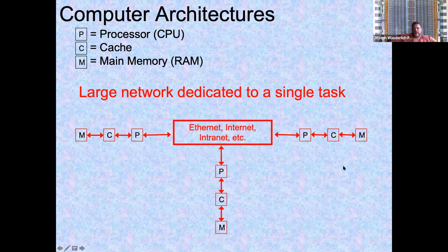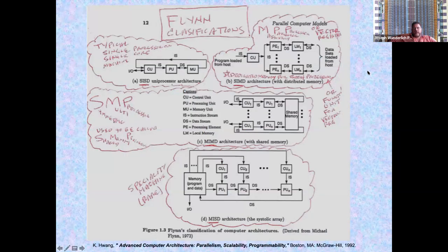Large networks dedicated to a single task can use the internet to borrow machine cycles and solve things like the human genome. Now, since this is an advanced class, we're going to get into the formal Flynn classifications and start drilling down into the details.